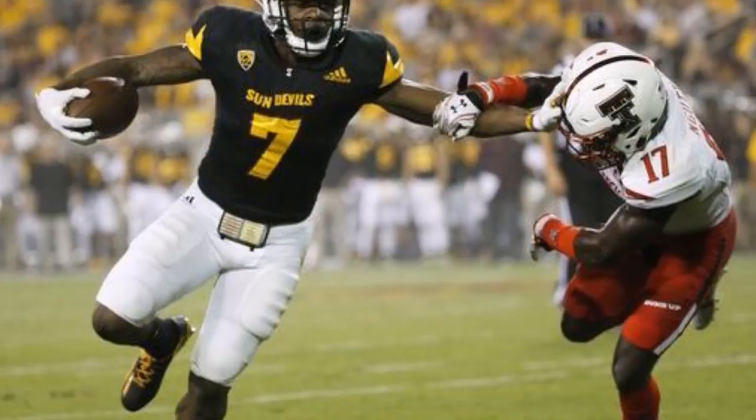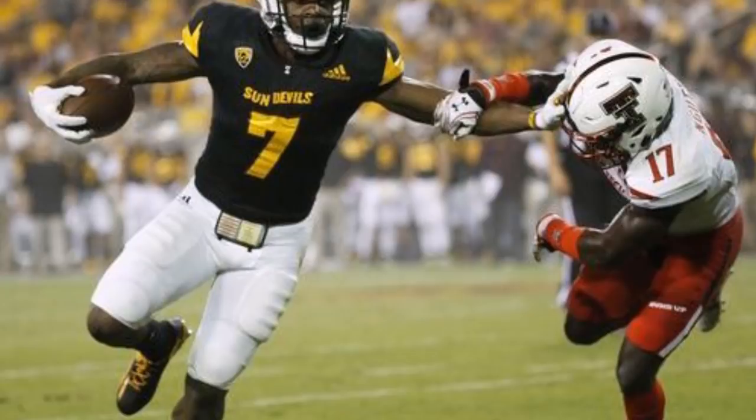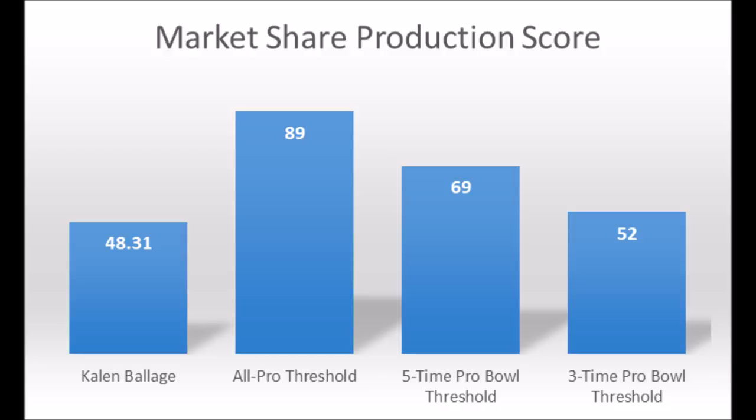Getting into Kalen Balich's production profile, the only sort of red flag is he only had a 48.31 market share production score. He didn't hit the all-pro threshold of 89 or higher, didn't hit the 5x Pro Bowl threshold of 69 or higher, and also didn't hit the 3x Pro Bowl threshold of 52 or higher. The vast majority of multiple Pro Bowl running backs had at least above-average running back production out of college.